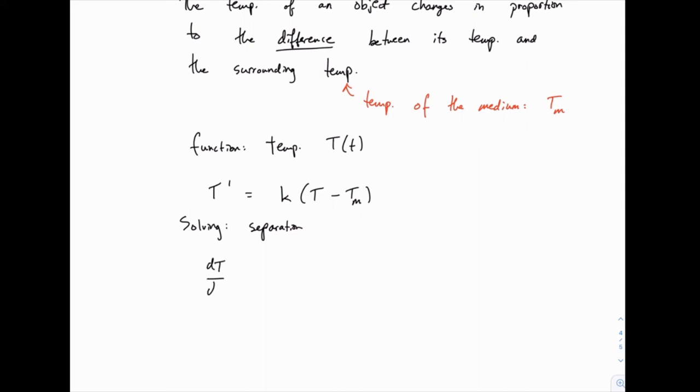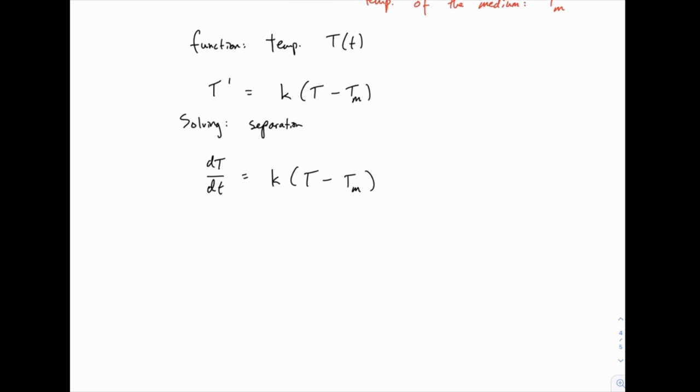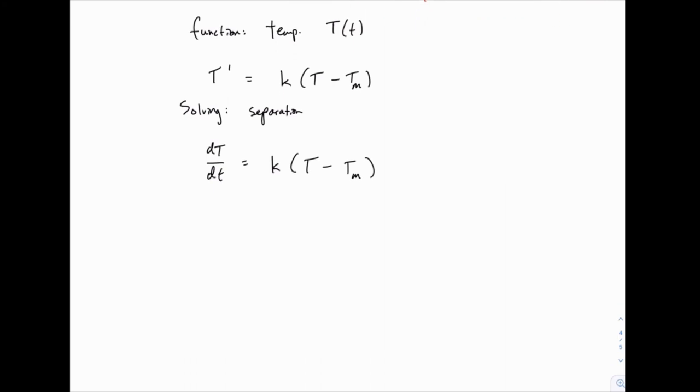We can again write T prime as dT over dt and then K times T minus T_M. And then we can divide T minus T_M on both sides and multiply little dt on both sides. If we integrate, the right hand side just becomes KT plus C. The left hand side becomes ln of T minus T_M.